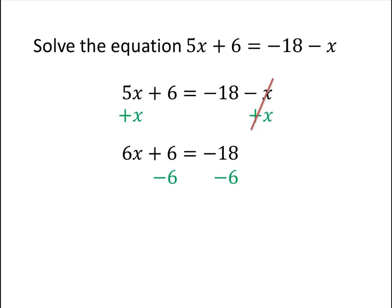That gets rid of the 6 on the left-hand side, plus 6 minus 6 equals 0. And on the right-hand side, minus 18 minus 6 equals negative 24.